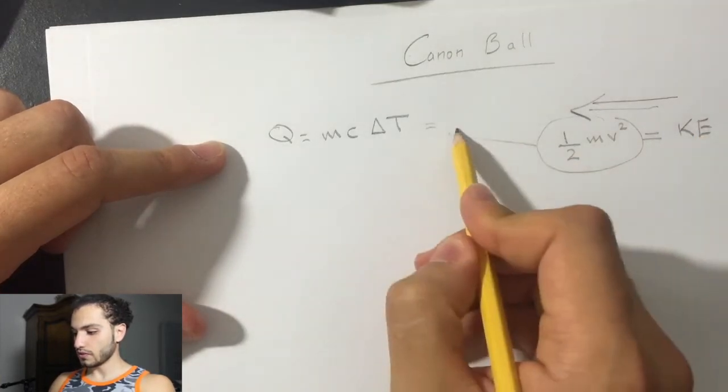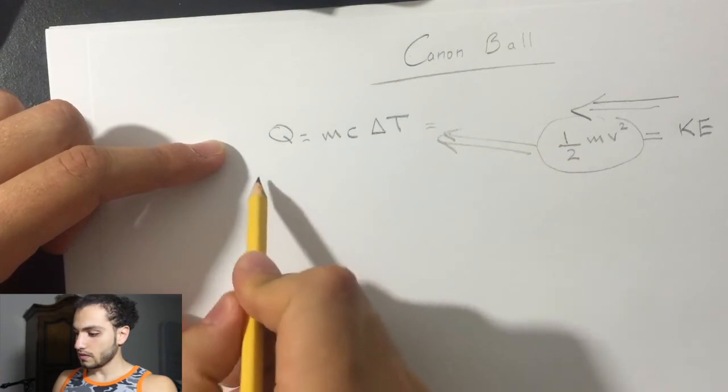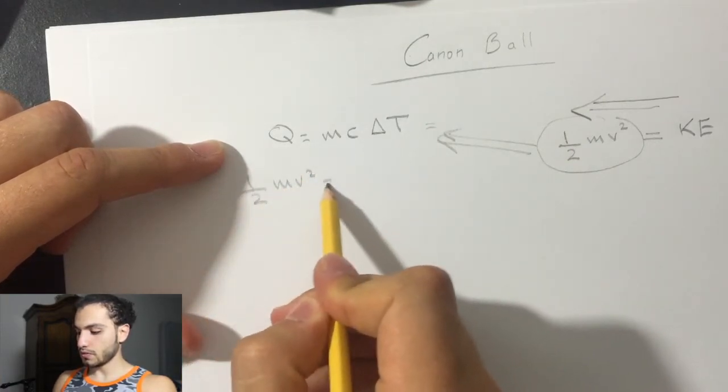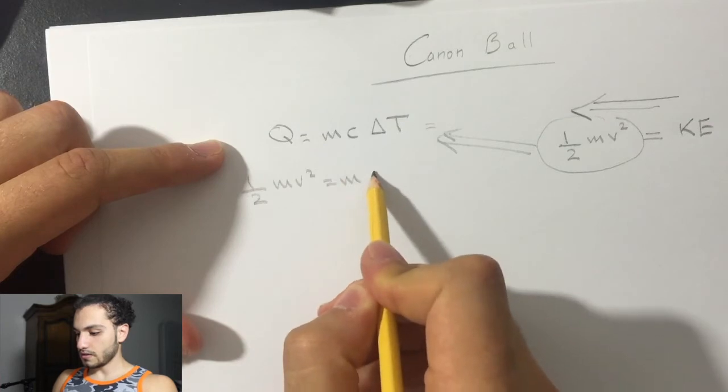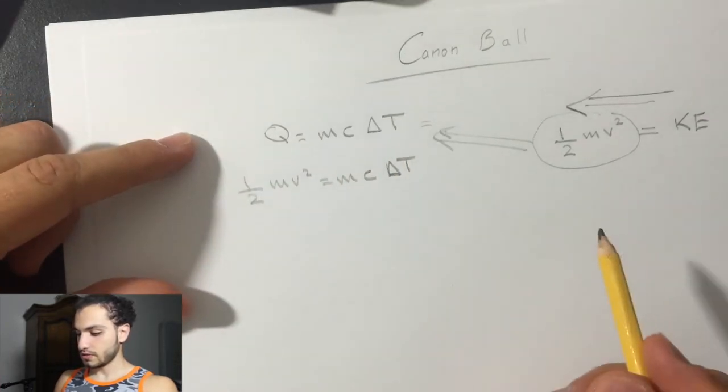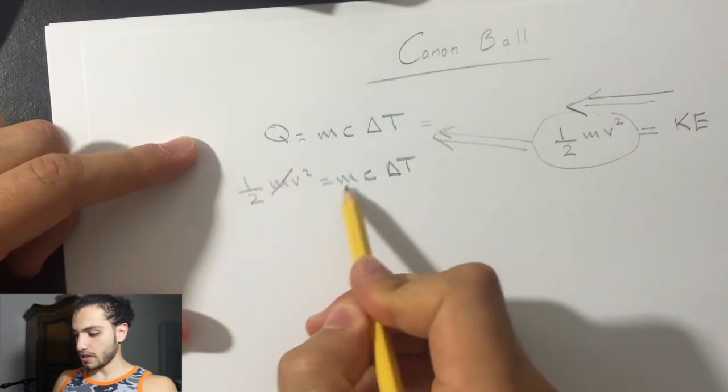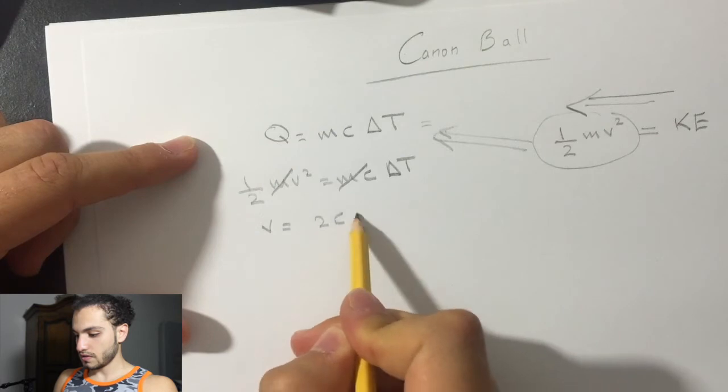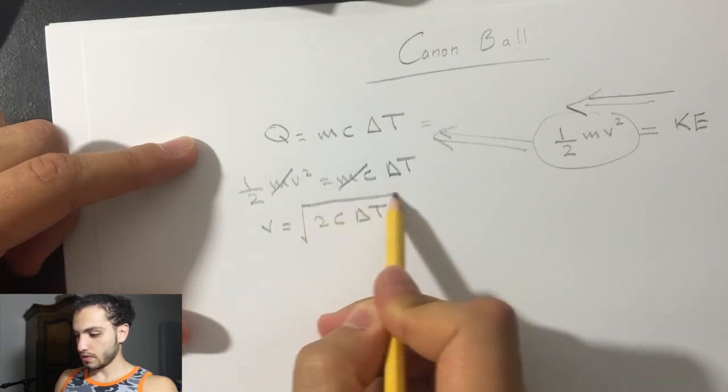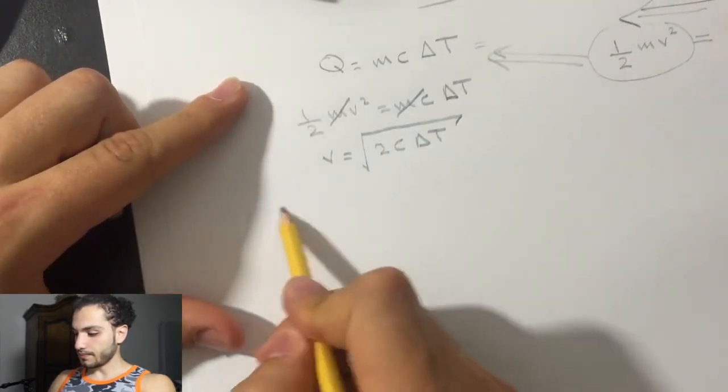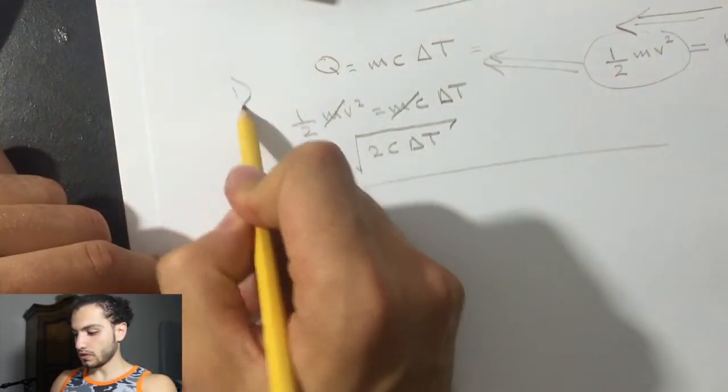Okay, so we just set this equal to this, and then half mv squared will be equal to the mass times specific heat times delta T, the change in temperature. We can cancel the masses, so the velocity will be equal to square root of 2C delta T. All right, so that's number one.